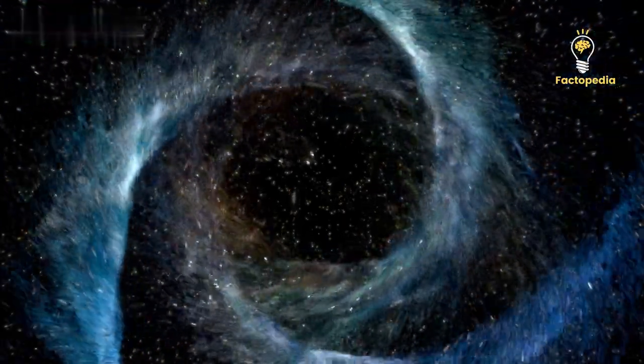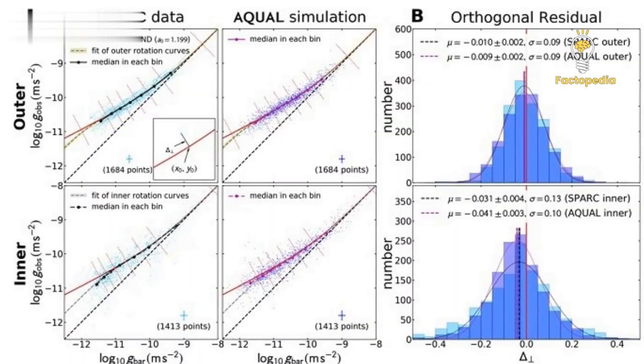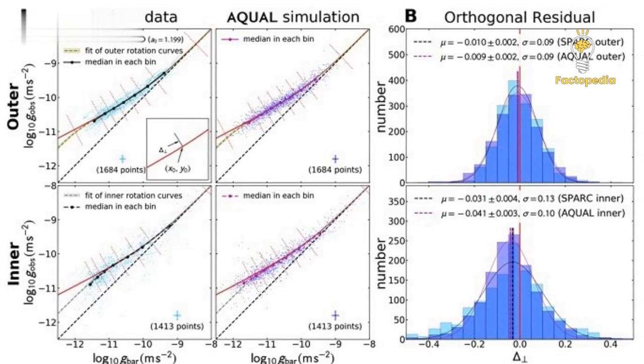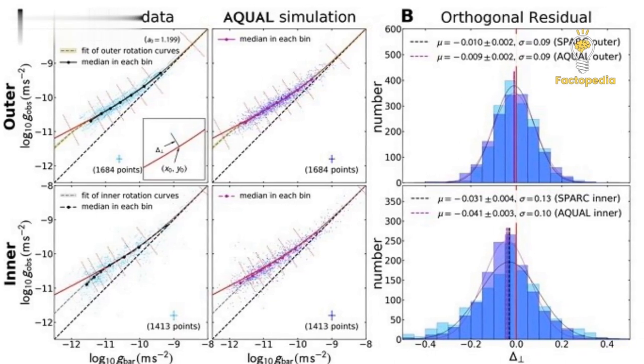Scientists have been exploring modified Newtonian dynamics, specifically AQUA, to explain the observations of galaxy rotation curves. AQUA modifies Newtonian gravity by incorporating a threshold acceleration and a generalized function in the Lagrangian.